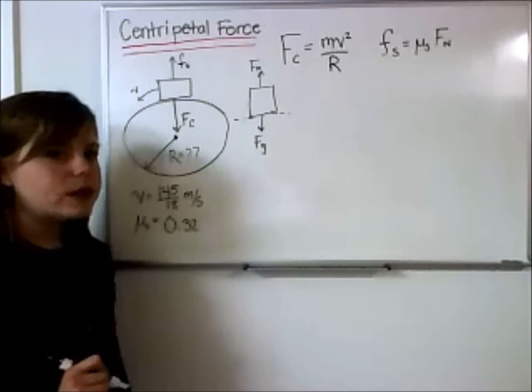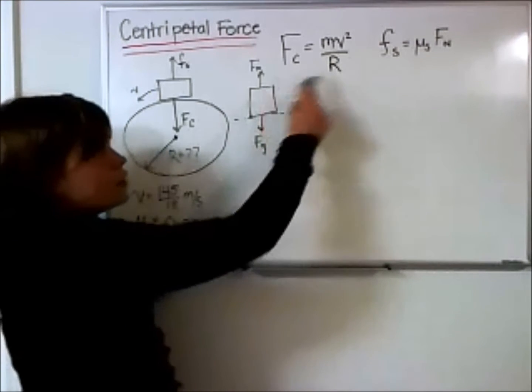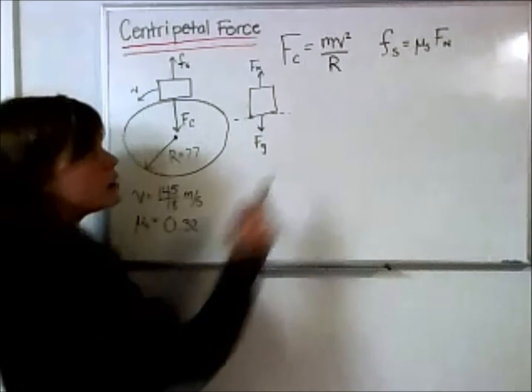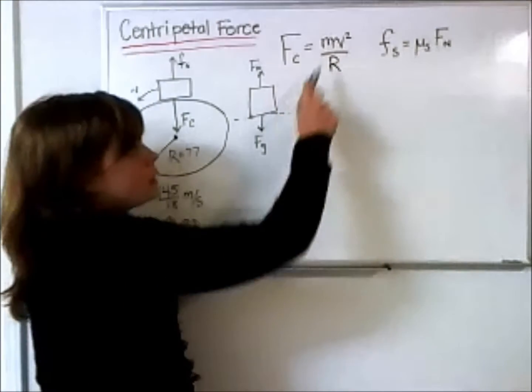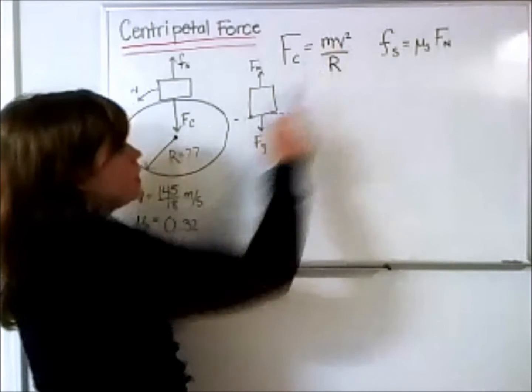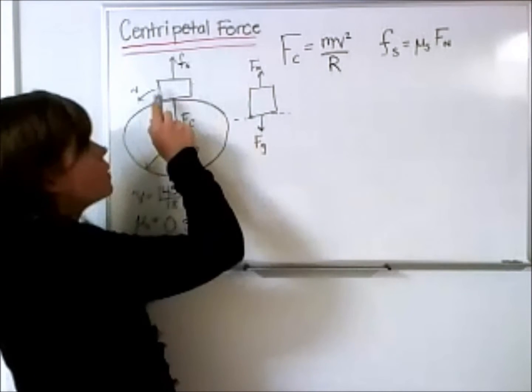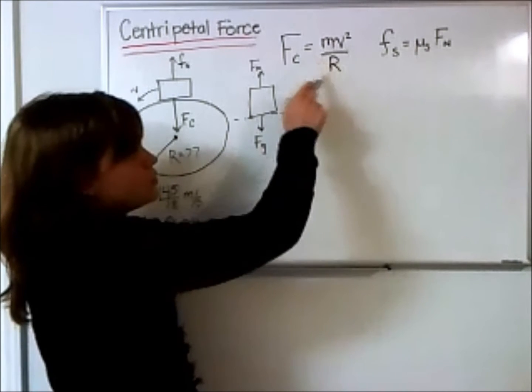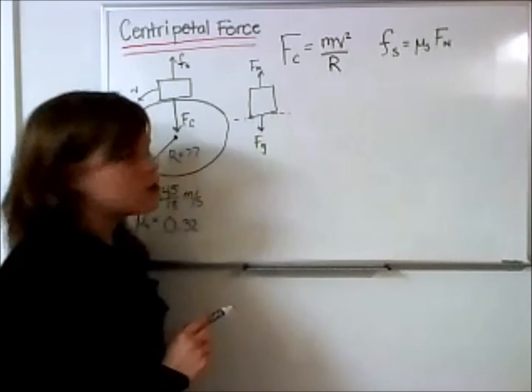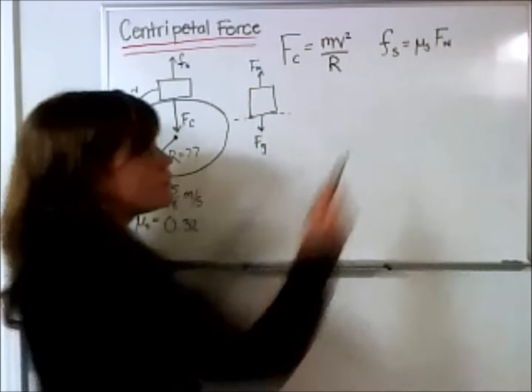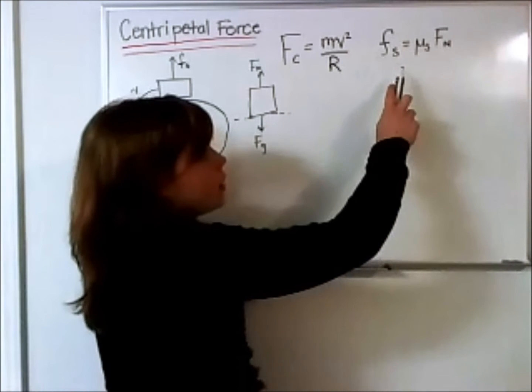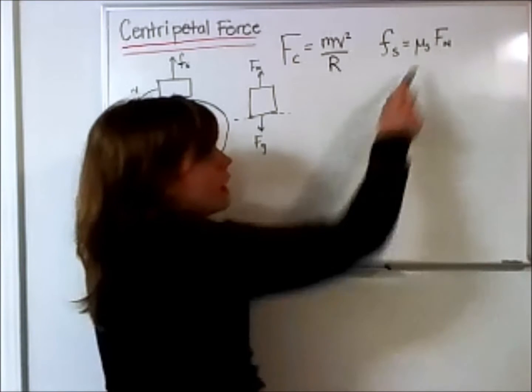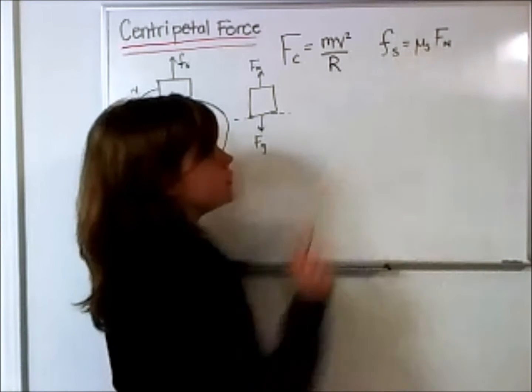I have also written the equations for the centripetal force and the frictional force. The centripetal force is dependent on this velocity of our cars as it moves around the track, as well as inversely proportional to the radius, the size of this track. The frictional force is proportional to the normal force acting on the car from the track, as well as this coefficient of friction.